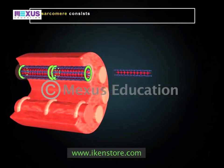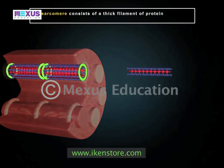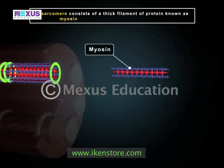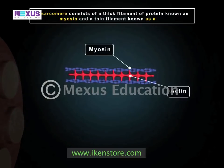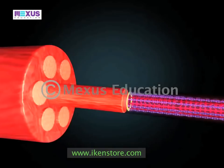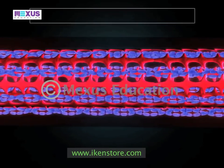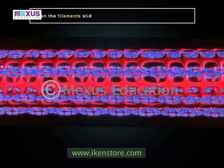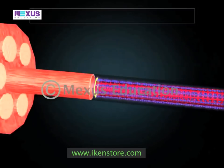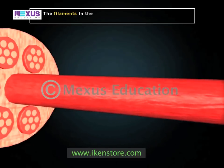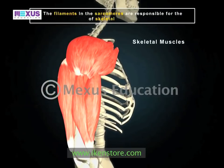Each sarcomere contains two long fibrous proteins. The thicker filament of protein is known as myosin, while the thinner filament is known as actin. When a muscle receives nerve impulses, these filaments slide over each other and the muscle contracts. The filaments in the sarcomeres are responsible for the striation of skeletal muscles.